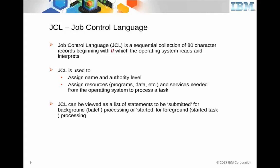JCL is used to assign a name, and that name has an authority level associated with it because there's usually a security package that looks at that and says here's your authority. If you submit it, it takes on the authority of your ID. JCL is also used to assign resources — a program, some data. JCL can be viewed as a list of statements to be submitted for background batch processing or started for foreground processing.